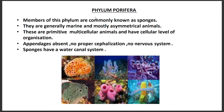Phylum Porifera members are basically sponges by name. They are generally marine, which means they are mostly living in oceans. The body is neither bilateral nor radial — they are irregular in shape, so their symmetry is asymmetrical.